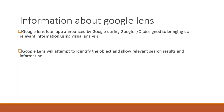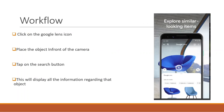Let's see the workflow of Google Lens. Click on the Google Lens icon, place the object in front of the camera, and tap on the shutter button. This will display all the information regarding that object.